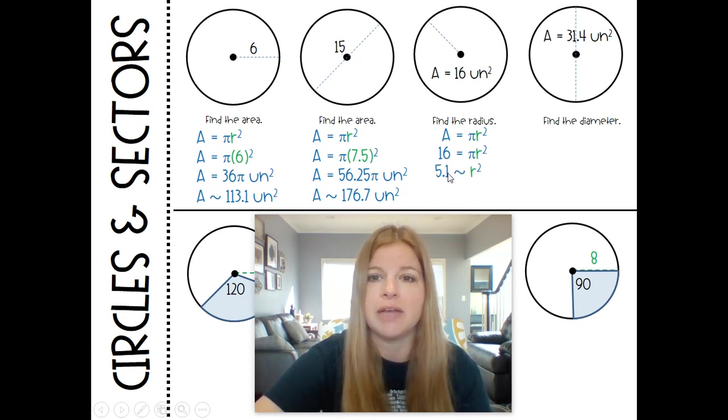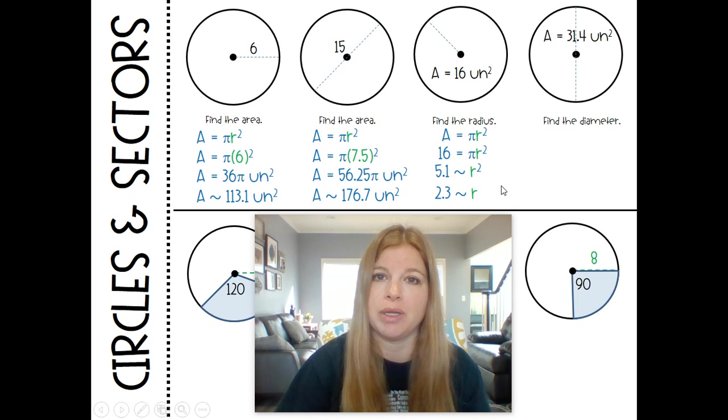And I'm going to use that approximately because it's obviously not exact. Then take the square root on both sides and I would get a radius of about 2.3.